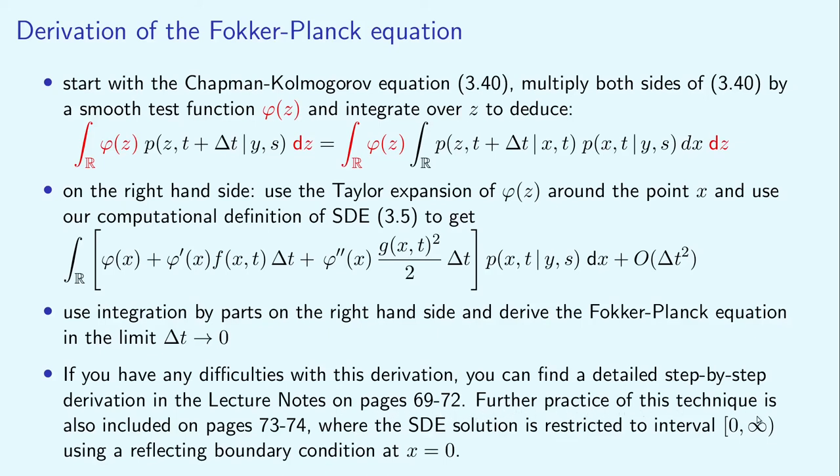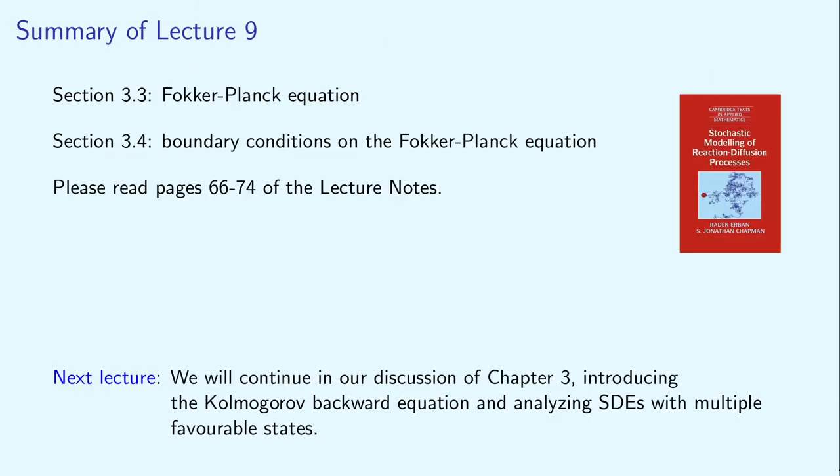Further practice of this technique is also included on pages 73 to 74, where the SDE solution is restricted to the interval zero to infinity using a reflective boundary condition at x equals zero. This brings me to the end of lecture 9, where we have continued our discussion of Chapter 3, covering sections 3.3 and 3.4 on the Fokker-Planck equation. Please read pages 66 to 74 of the lecture notes before watching lecture 10. In our next lecture, we will introduce the Kolmogorov backward equations and analyze SDEs with multiple favorable states. Thank you for listening to lecture 9 of our course on stochastic modelling of biological processes. Bye-bye!